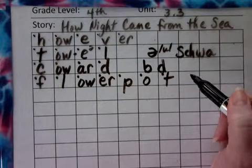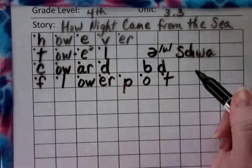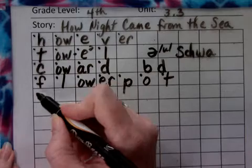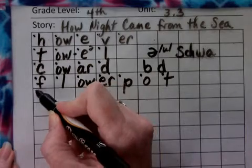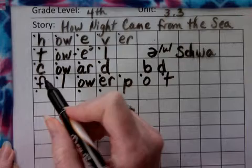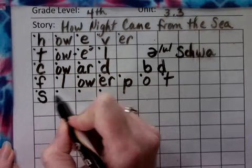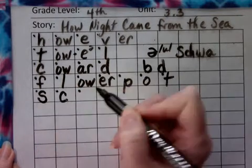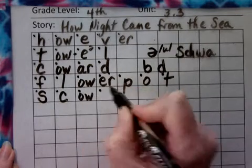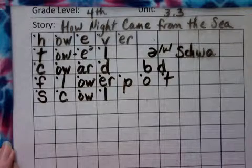The next word is 'scowl.' He made a scowl on his face. Sound it out: S-K-OW-L. The first sound is S, then K, then OW, then L. Scowl.